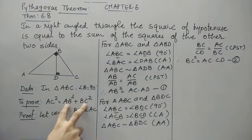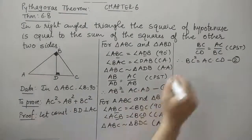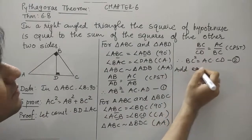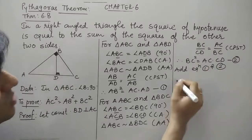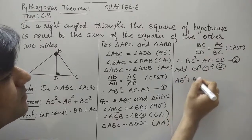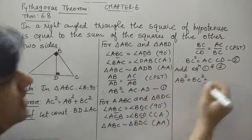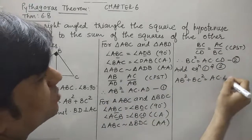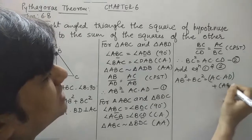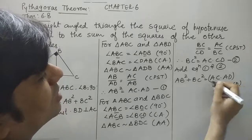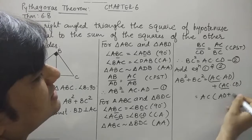In the proof, we require the sum of AB² and BC². So let us add equation 1 and equation 2. AB² + BC² equals AC × AD + AC × CD. We can observe that AC is common from both terms on the right-hand side, so it remains AC × (AD + CD).